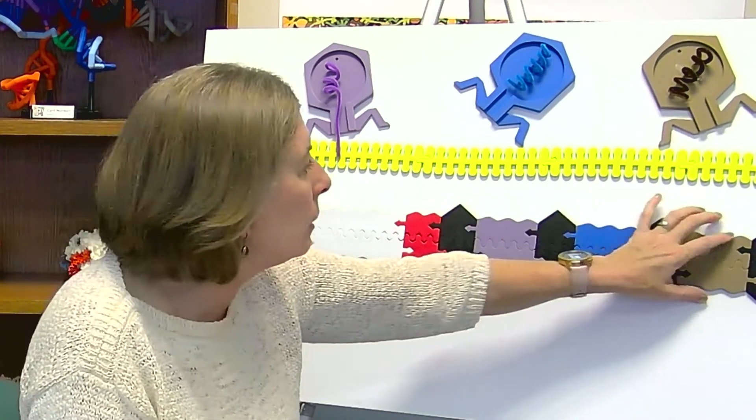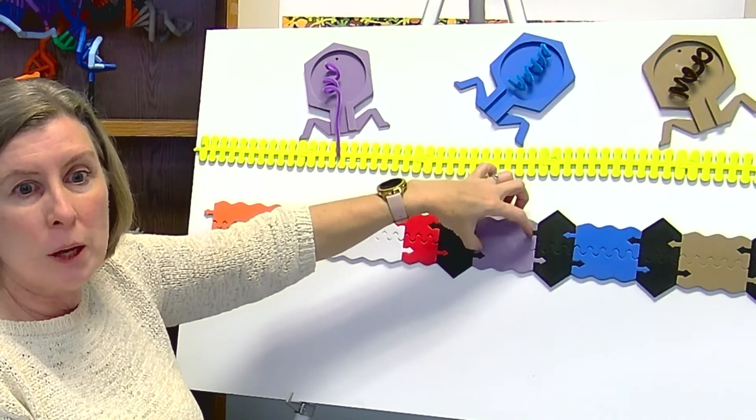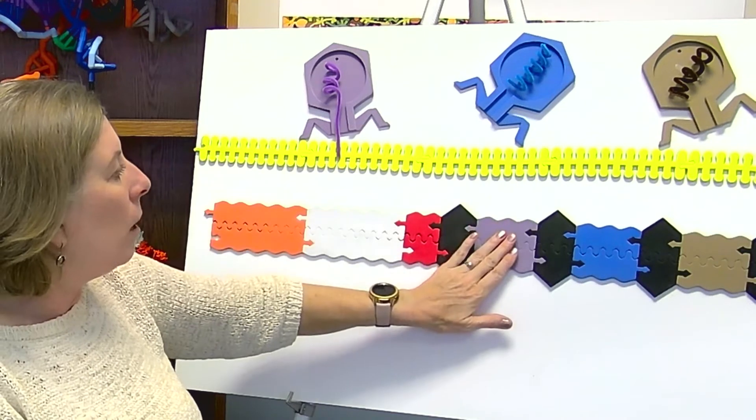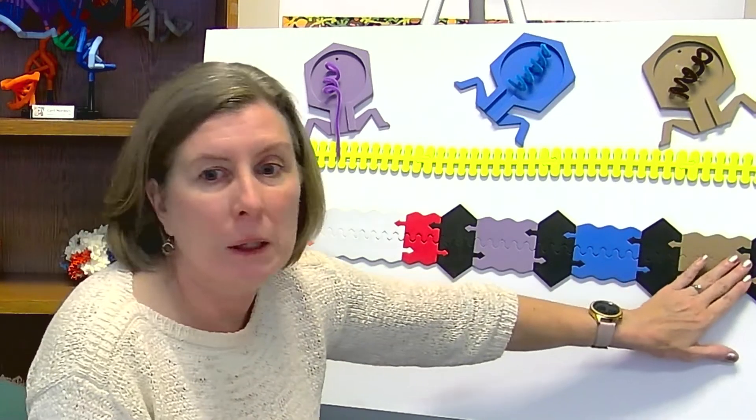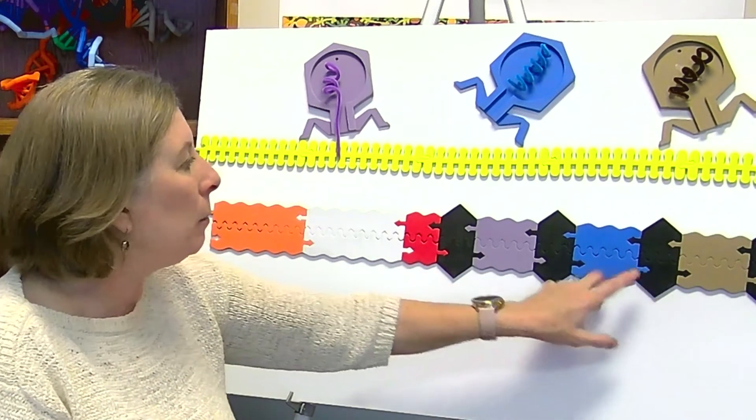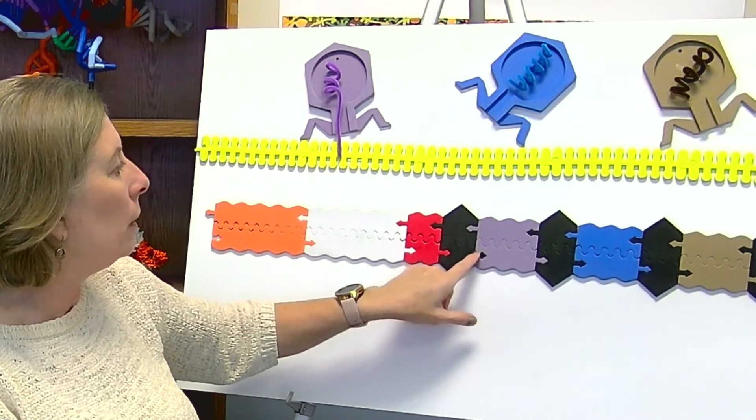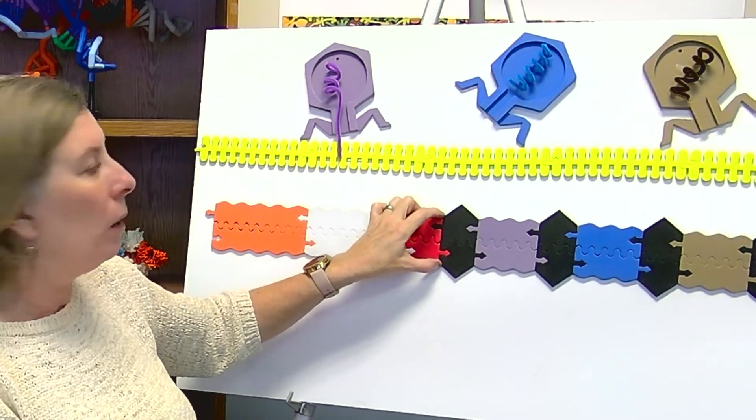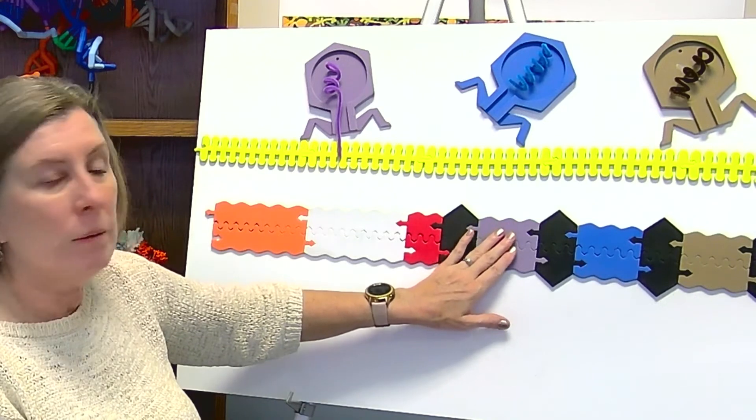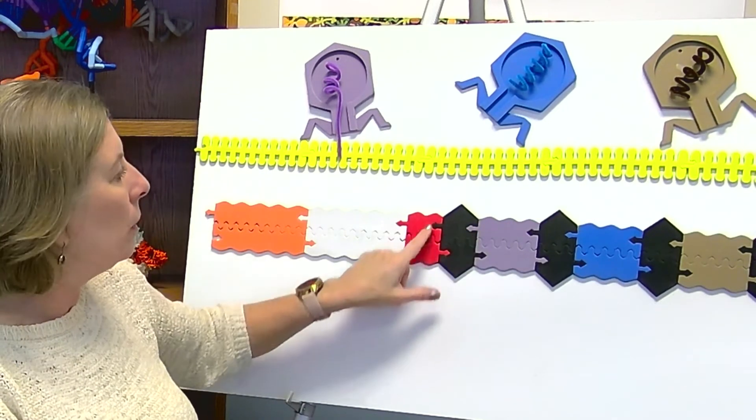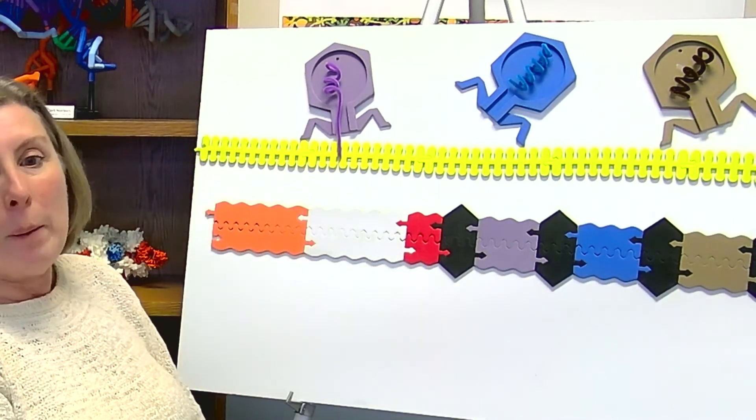When a bacteriophage injects its genetic material into the bacteria, what it can do is take a snippet of that and stick it into this CRISPR array. This part of the locus is little pieces of bacterial genetic material DNA RNA separated by these repeats. Every time a new infection happens, it sticks another piece of viral sequence in between repeats and adds another repeat. The most recent infections are closest to the start of this red piece, and the older ones are further back.